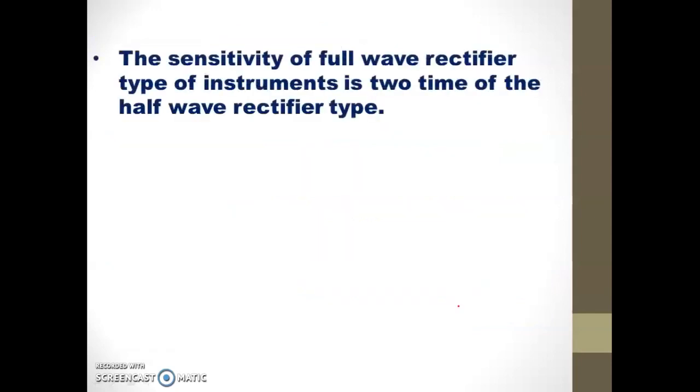That means the sensitivity of the full-wave rectifier type of AC voltmeter is 2 times that of the half-wave rectifier type.